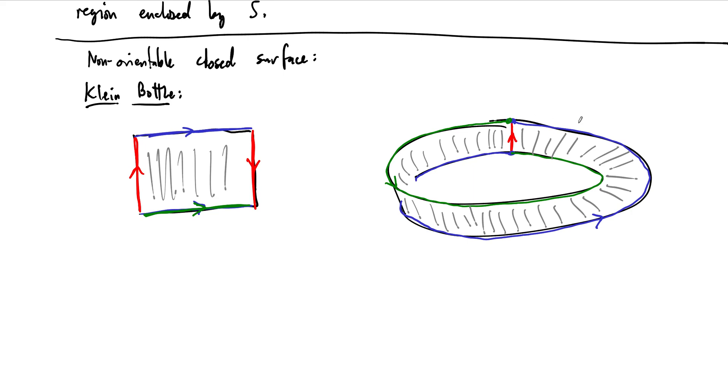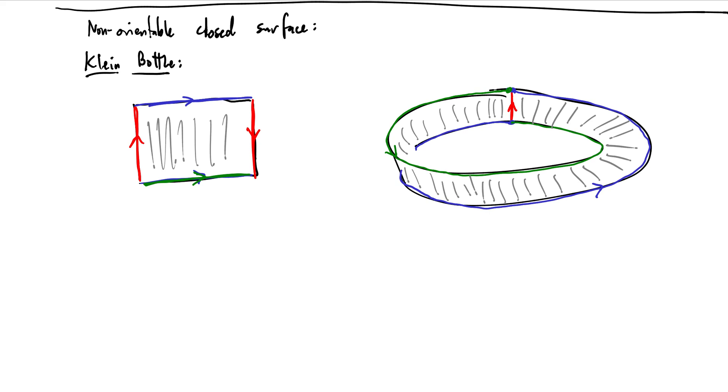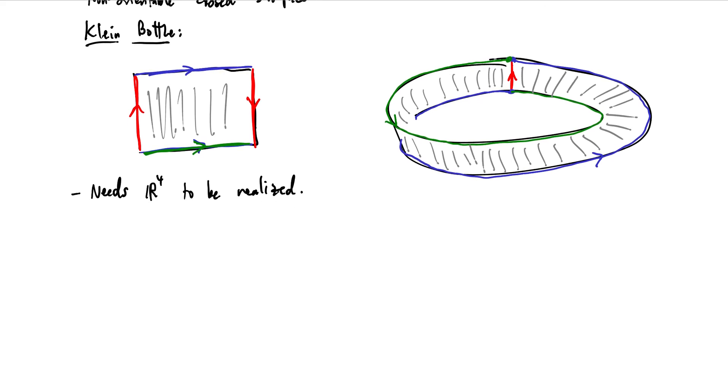And that Klein bottle is non-orientable. It's a closed surface but it's non-orientable. And it turns out the Klein bottle cannot be constructed in three dimensions. So the Klein bottle needs a fourth dimension, R⁴, to be realized. And as you work through this, as you think about this, it's a little mind-blowing, but think about it. You'll understand why, I think. So there's another way to actually consider the Klein bottle.